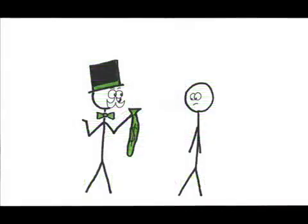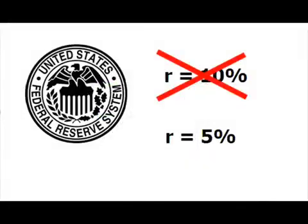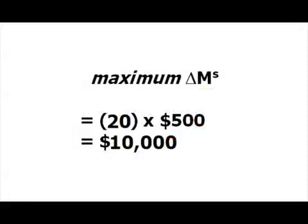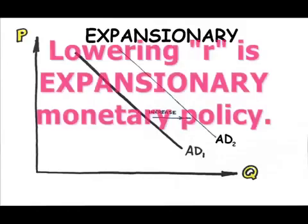What if the Fed decreases the reserve requirement to 5%? Now the multiplier — 1 over R, or 1 over 0.05 — is 20, so a $500 change in reserves can make up to a $10,000 difference in the money supply. Decreasing the required reserve ratio makes more money available for lending, thereby increasing spending in the economy — an expansionary monetary policy.